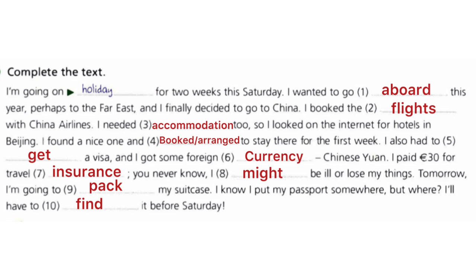I am going on holiday for two weeks this Saturday. I wanted to go abroad this year, perhaps to the forest, and finally I decided to go to China. I booked the flight with China Airlines. I needed accommodation too, so I looked on the internet for hotels in Beijing. I found a nice one and booked to stay there for the first week. I also had to get a visa and I got some foreign currency — Chinese Yuan. I paid 30 pounds for travel insurance. You never know, I might be ill or lose my things. Tomorrow I'm going to pack my suitcase. I know I put my passport somewhere, but I have to find it before Saturday.